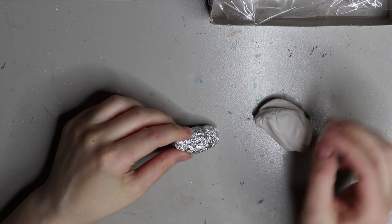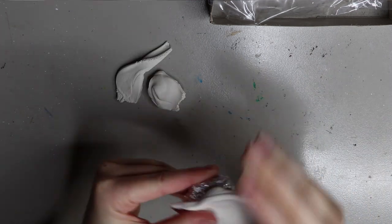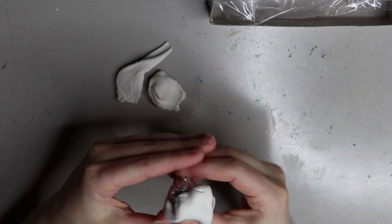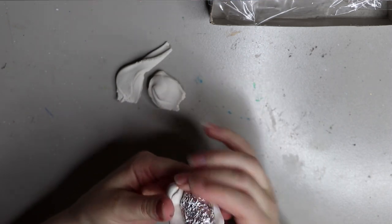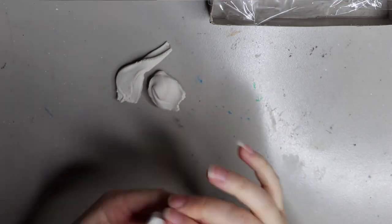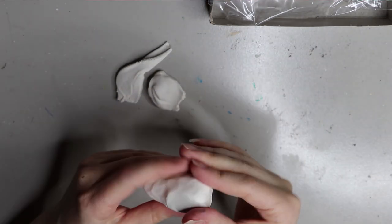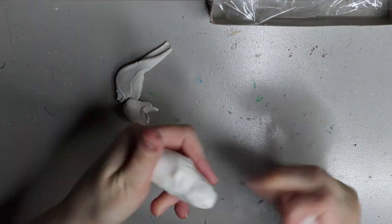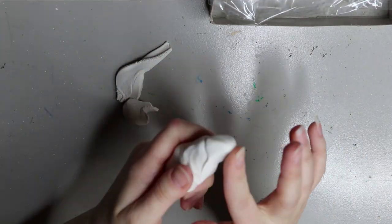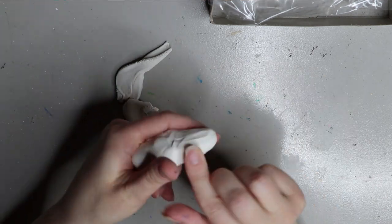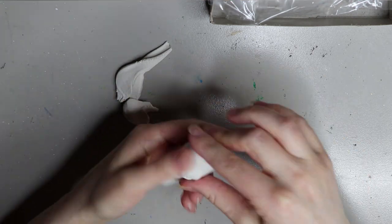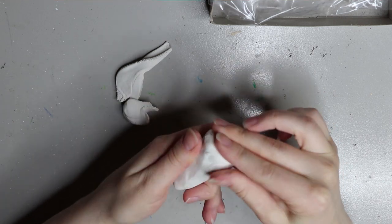The next thing I'm doing is using a foil base for my sculpture. By using a foil base, you use a lot less clay and it makes the sculpture a little bit lighter as well. Something to always keep in mind when you're making a doll is how heavy the parts actually are.